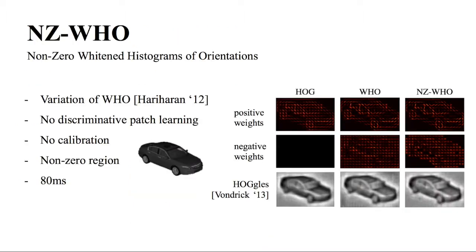To achieve such constraints, we propose a variation of WHO called non-zero whitened histograms of orientations. The NZ-WHO template is a whitened WHO template of a rendering image. Compared to recent 2D-3D registration methods, ours do not require training nor calibration and can be generated in 80 milliseconds, compared to several seconds for a WHO template.